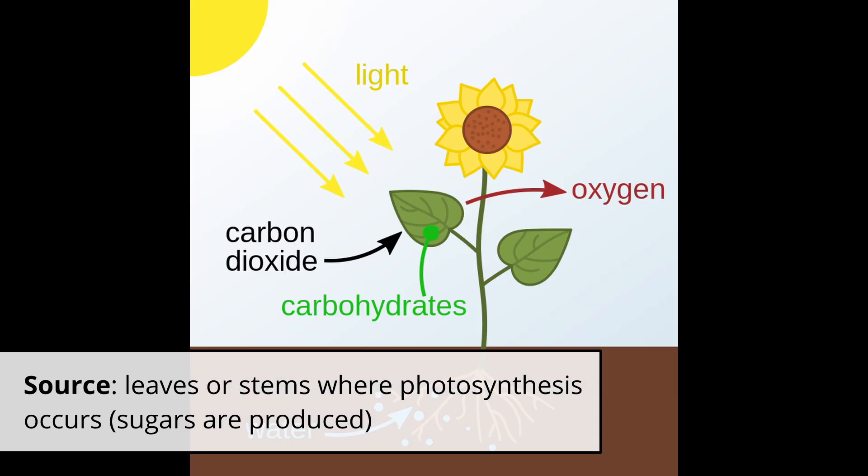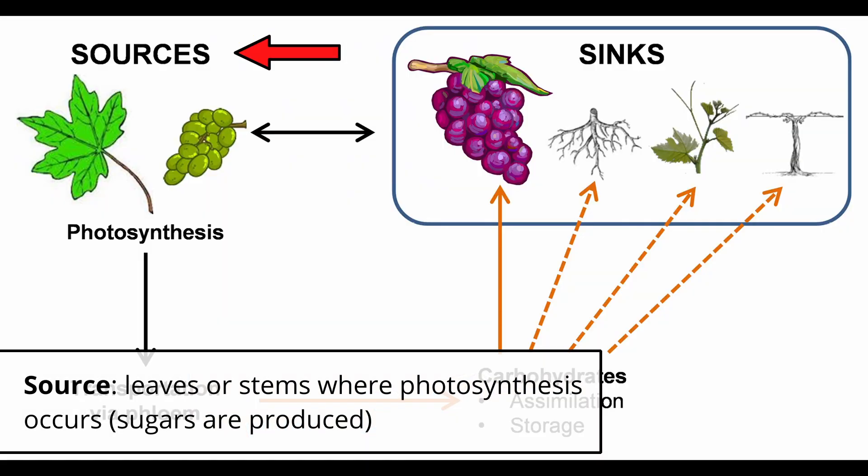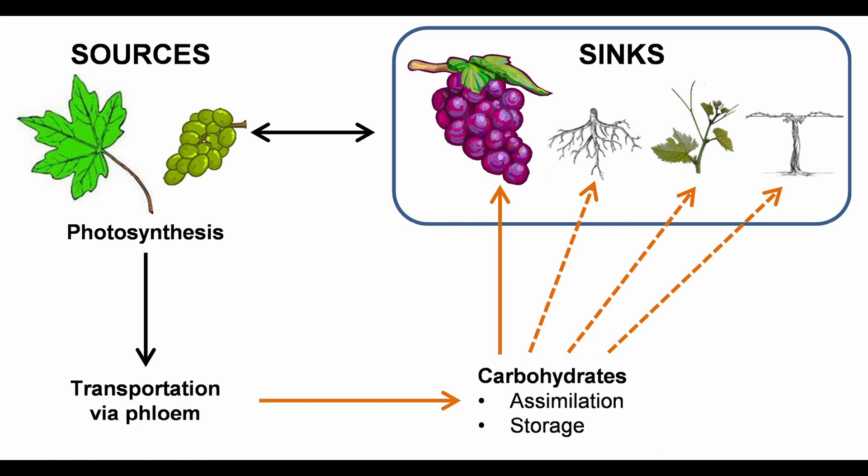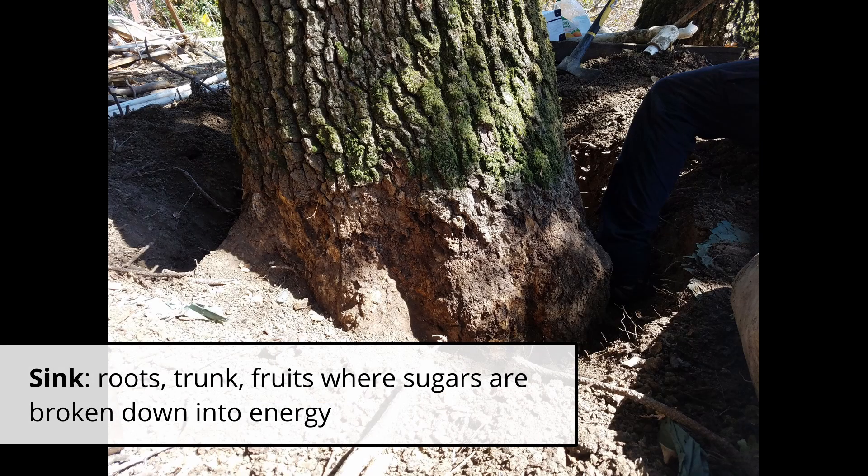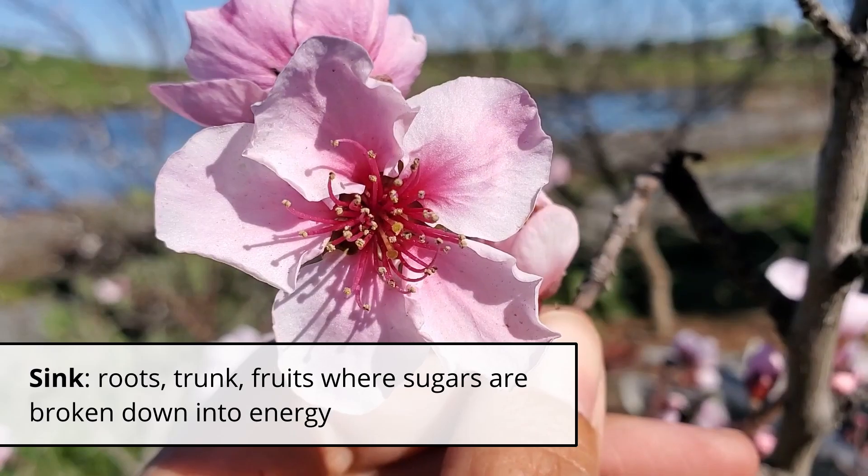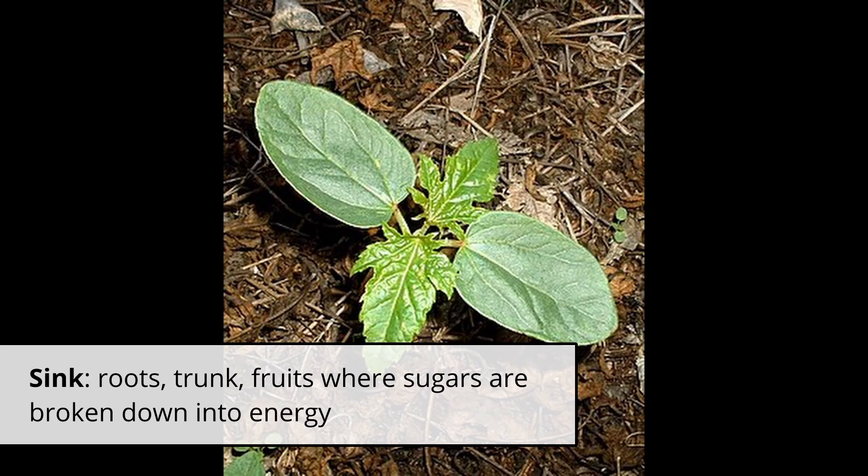Since photosynthesis produces sugars or photosynthates, the leaves or the stems where photosynthesis occurs is called the source. From there the photosynthate is moved to different parts of the plant where it's needed and these are called the sinks. Examples of sinks are roots, trunks, flowers and even small leaves that haven't fully unfurled yet.